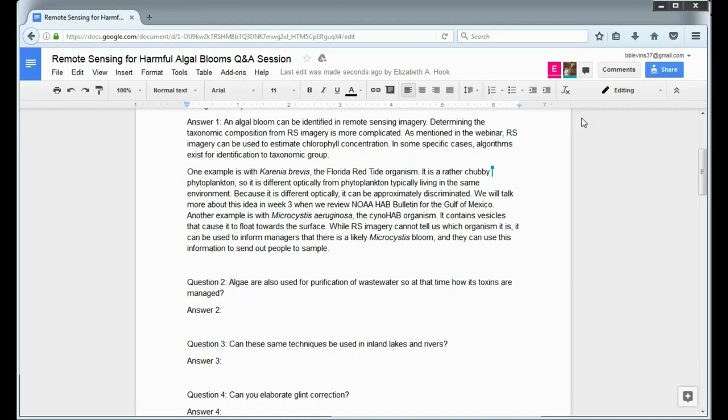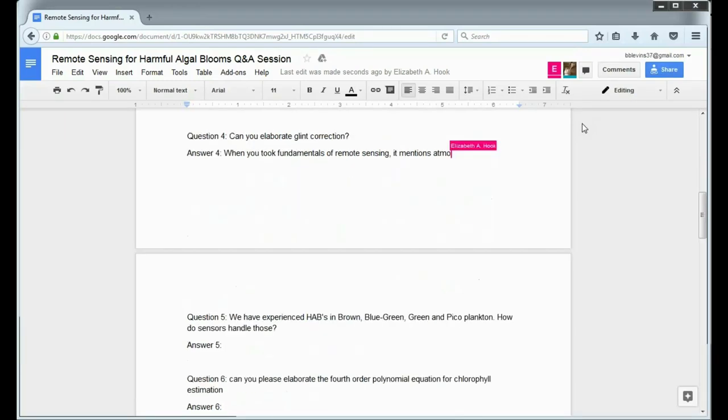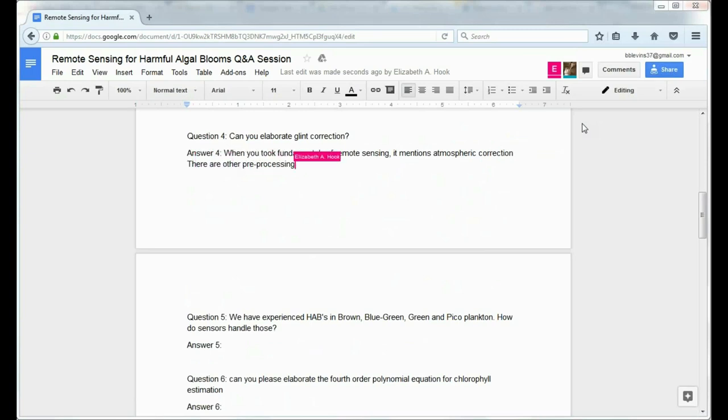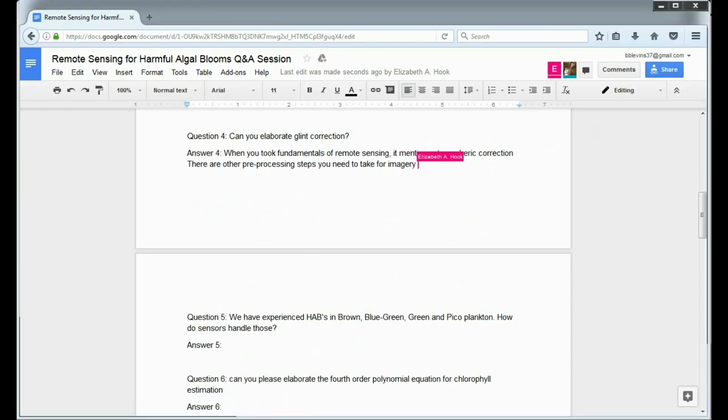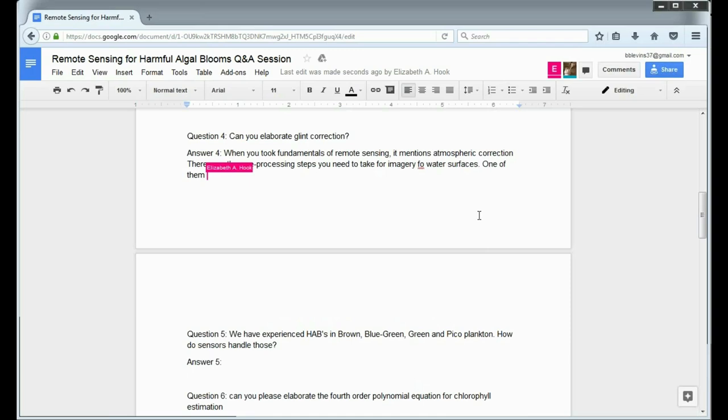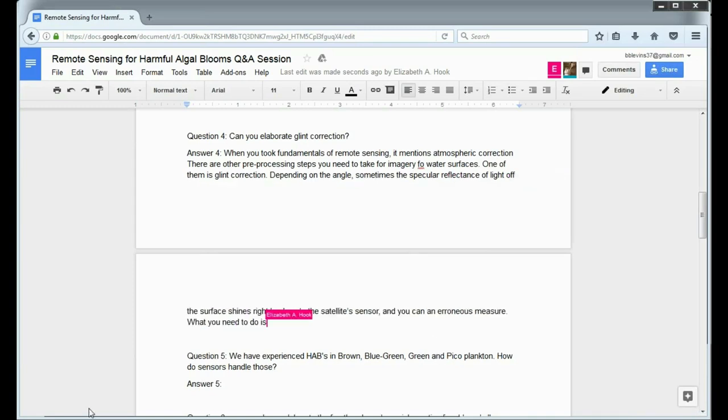Question number four talks about, what is glint correction? Okay, so when you took the fundamentals of aquatic remote sensing, I talked a fair amount about atmospheric correction. There are other pre-processing steps that you need to take with the correction of imagery of water surfaces, and one of those is the glint correction. So, what happens is, depending on what the sun angle is, when the imager goes over the water surface and it collects the data, sometimes the reflectance, the specular reflectance, kind of think of a mirror, the reflectance of light up off of the surface just shines right back up, and you get an erroneous measure of what, you're not getting the information that you want of the water, the light that's leaving the surface of the water, the water leaving radiance. And so, what you need to do is you need to find techniques that you can get rid of the glint or what that reflection is.